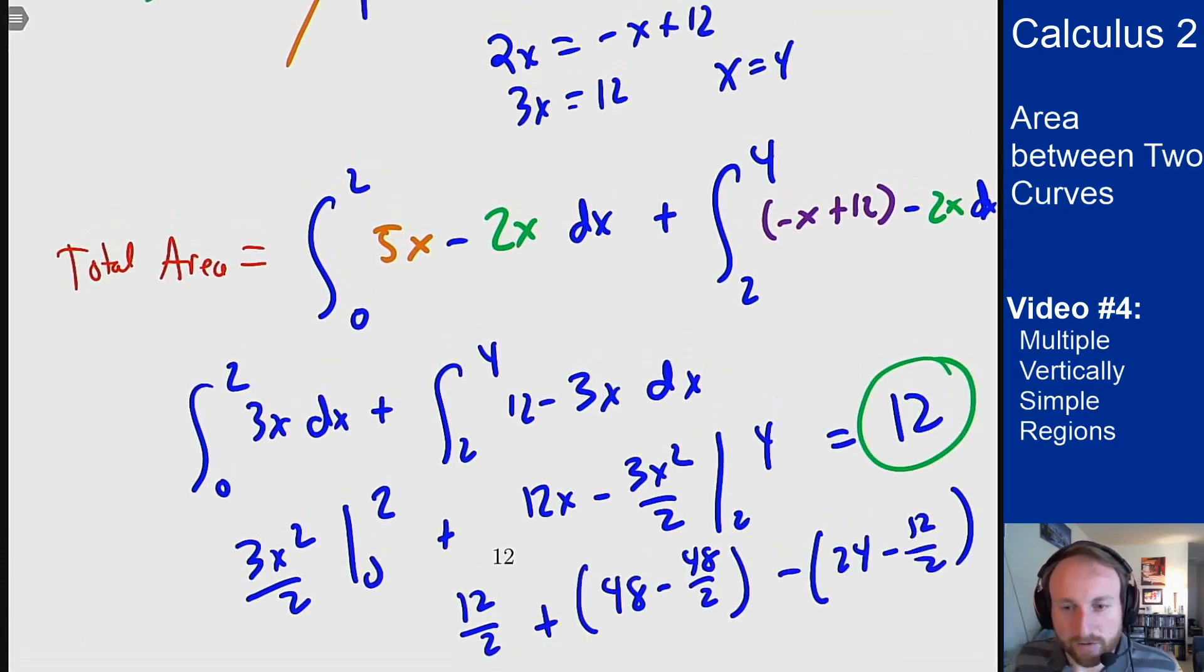So that's the idea for these multiple vertically simple regions problems, where there is usually a point where we have to split the region in half, where one half you have a function on top and bottom, the second half you have a function on top and bottom as well, but one of those functions is not the same. You can work out the areas just like normal and add them together to get your final answer for these sorts of problems.